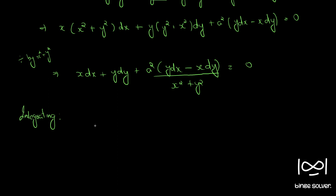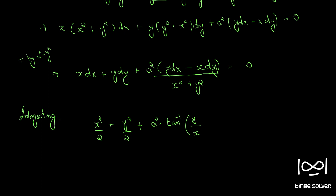Integrating, we have x square by 2 plus y square by 2 plus a square into tan inverse y by x. The differential of that part is the differential of tan inverse y by x, so when we integrate we get tan inverse y by x.